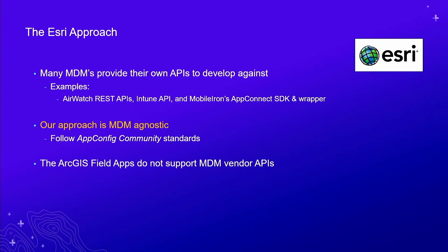So what's the Esri approach? Many MDM platforms provide their own APIs to develop against — examples include AirWatch, Intune, and MobileIron. The key takeaway is that for Esri, our approach is MDM agnostic. We don't build functionality for one specific MDM platform; we build uniform capabilities supported across many different MDM platforms, following the AppConfig community standard. Also be aware that the ArcGIS field apps do not support any MDM vendor APIs, so the idea of app wrapping is a deployment pattern we don't follow.